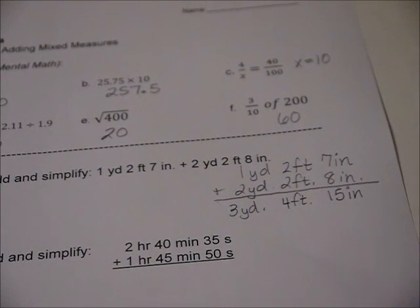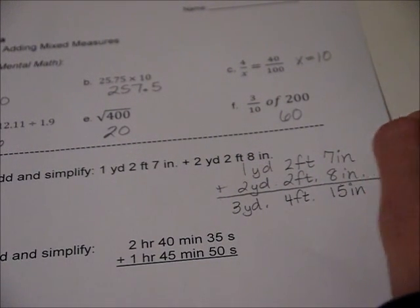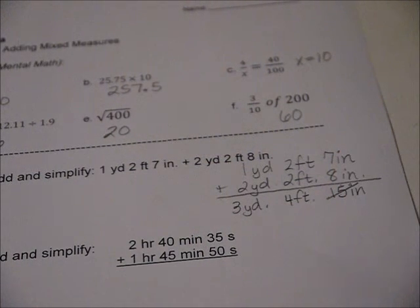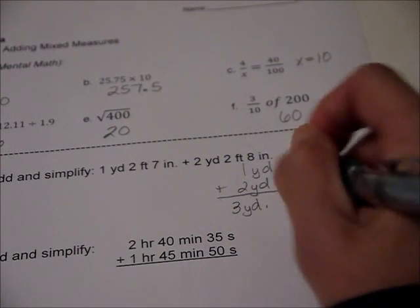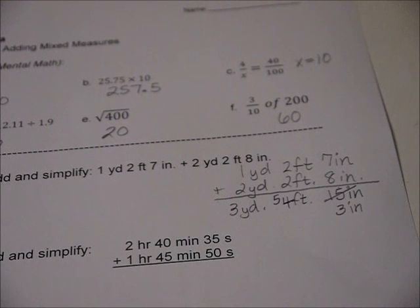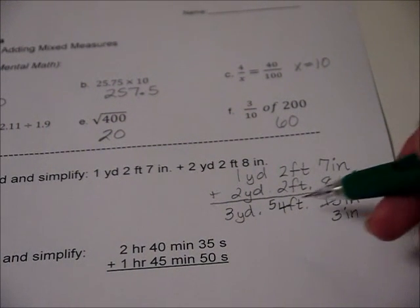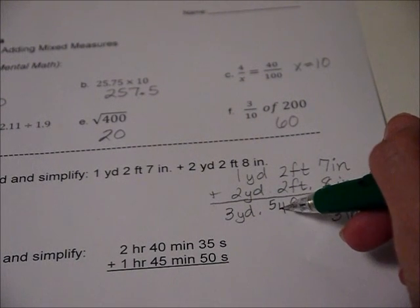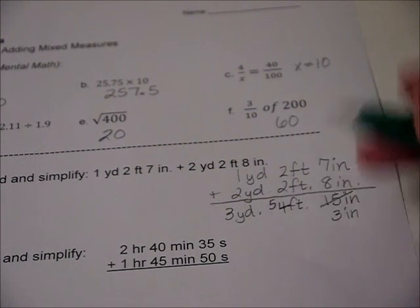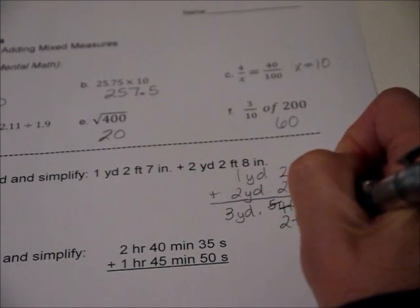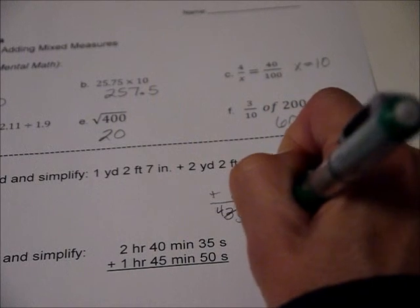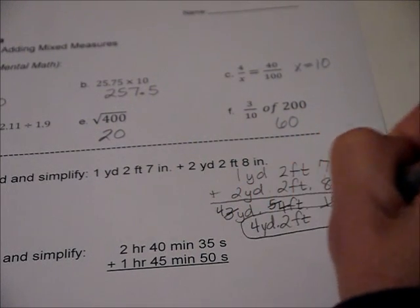So this needs to be simplified. This is kind of goofy to say something as three yards four feet and fifteen inches. So we're going to simplify. If we take a foot away from that, or twelve inches, we're left with three inches, and we're going to give a foot over to there, so it's really five feet three inches. However, three feet make a yard, so we're going to take three feet away from there. Now we've ended up with two feet and an extra yard here, so we're going to have four yards two feet and three inches when we simplify.